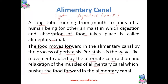In simple words, the elementary canal is a continuous canal which has many parts such as the mouth, food pipe, stomach, small intestine, large intestine, rectum, and anus. Three glands are also associated with the elementary canal: salivary glands, which are in the mouth, and then we have the liver and the pancreas.